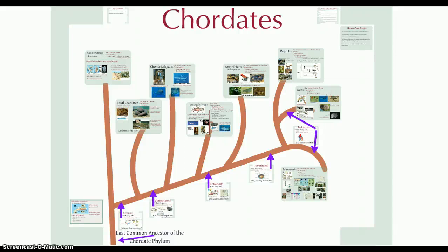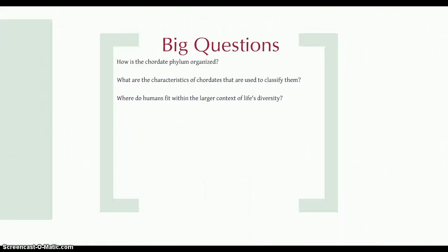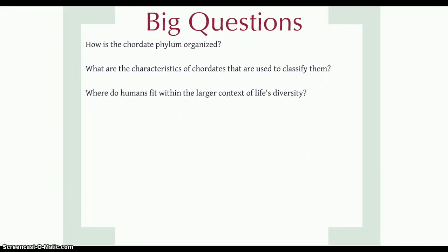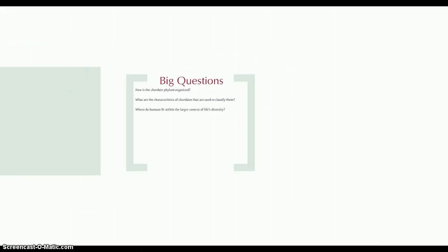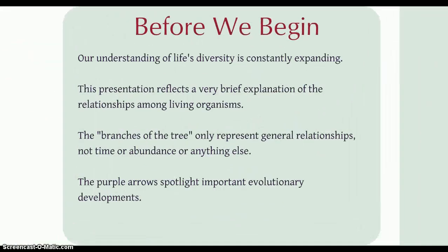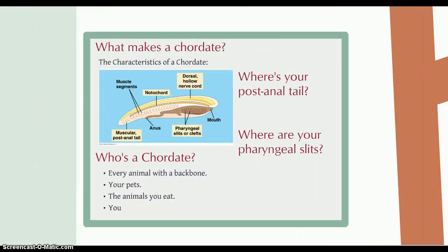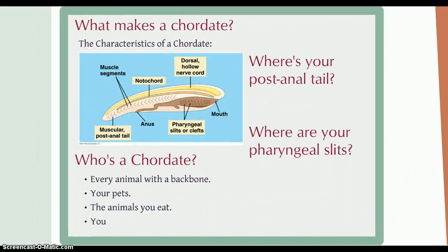Hello ladies and gentlemen, and welcome to our last major branch in the eukaryotic domain, the chordates. In this series of lectures, pay attention to major characteristics of chordates, the different groups within the chordate taxon, and pay attention to how humans fit into this evolutionary context of life. Occasionally you'll see some purple arrows — those will indicate significant moments in time in chordate evolutionary history.